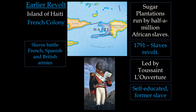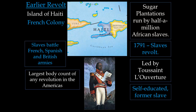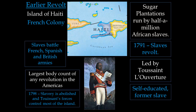They're not only going to have to throw off the French, but also Spanish and British armies that are sent over to crush this rebellion. It's going to lead to the bloodiest of all revolutions in the Americas — the largest body count. But by 1798, the slaves have essentially won. Slavery is abolished, and Toussaint's forces control most of the island.